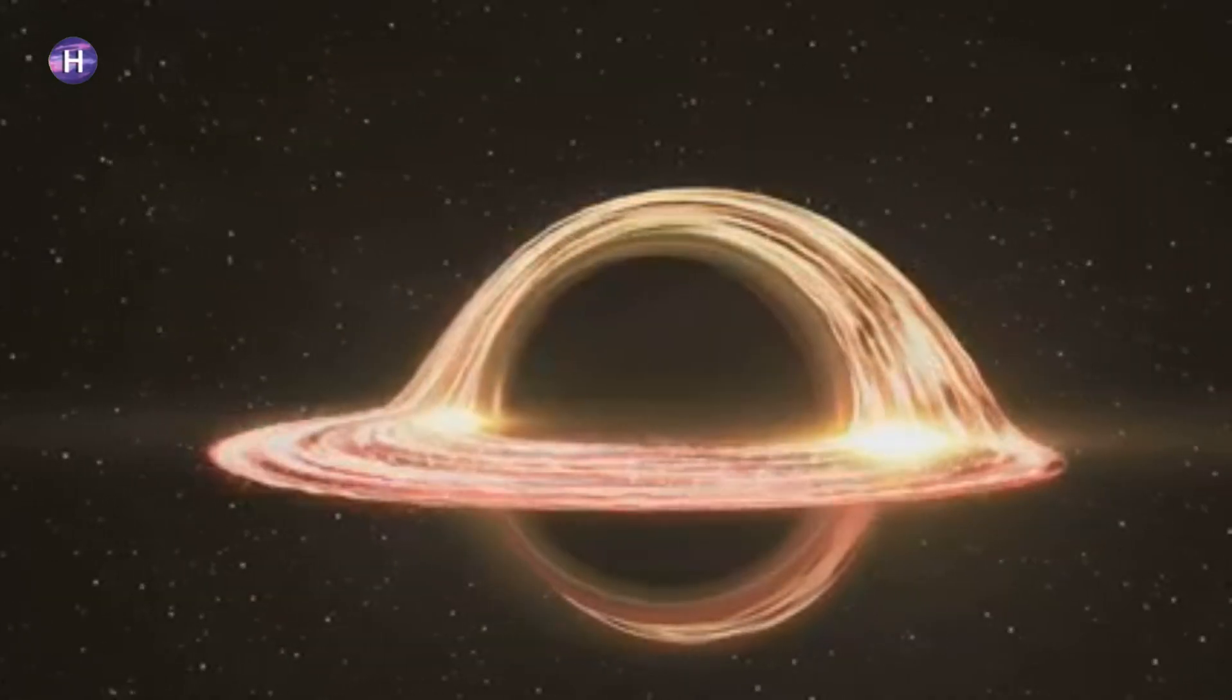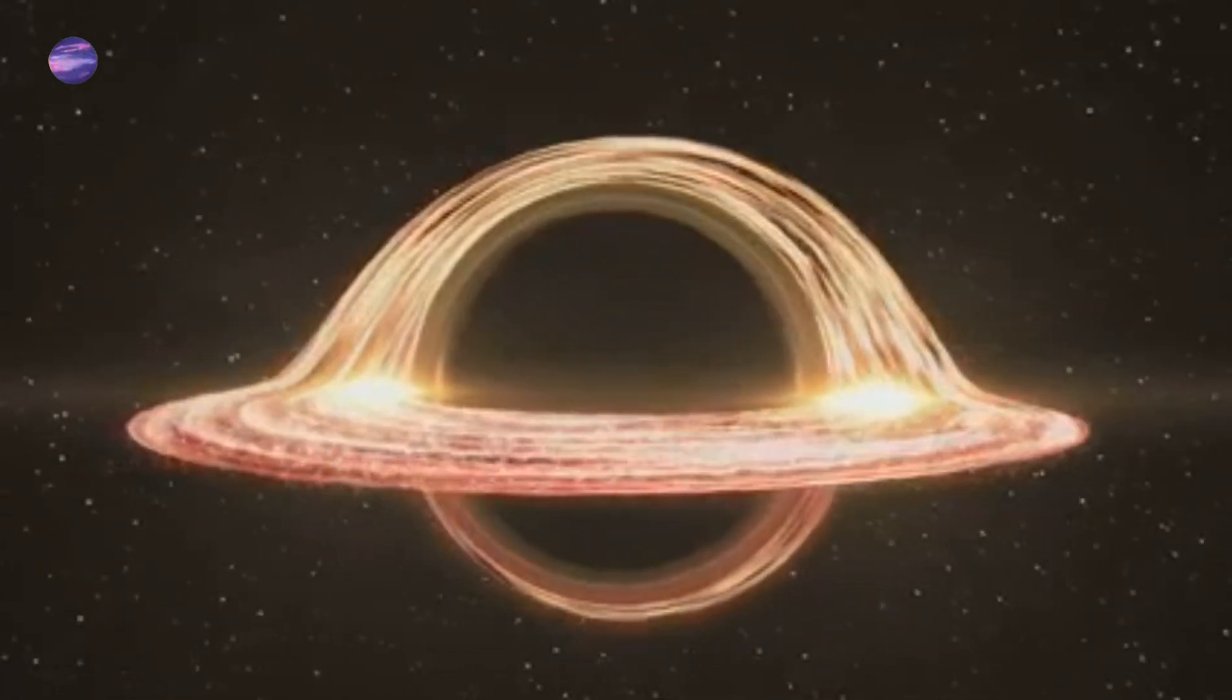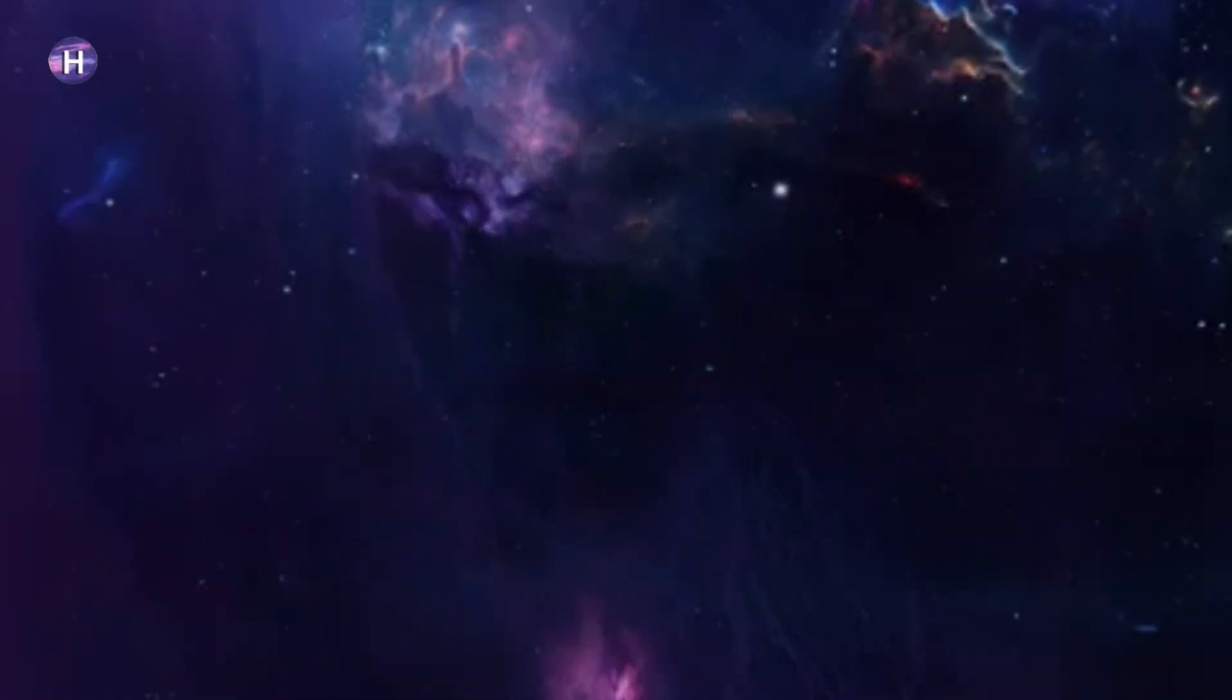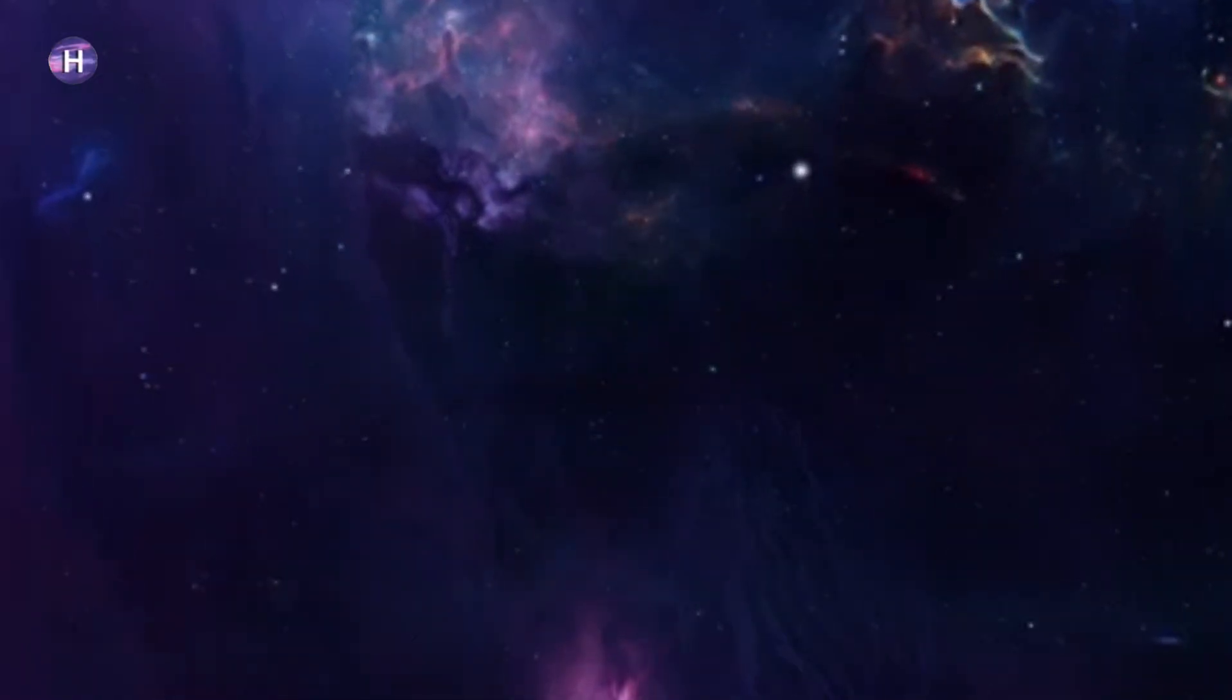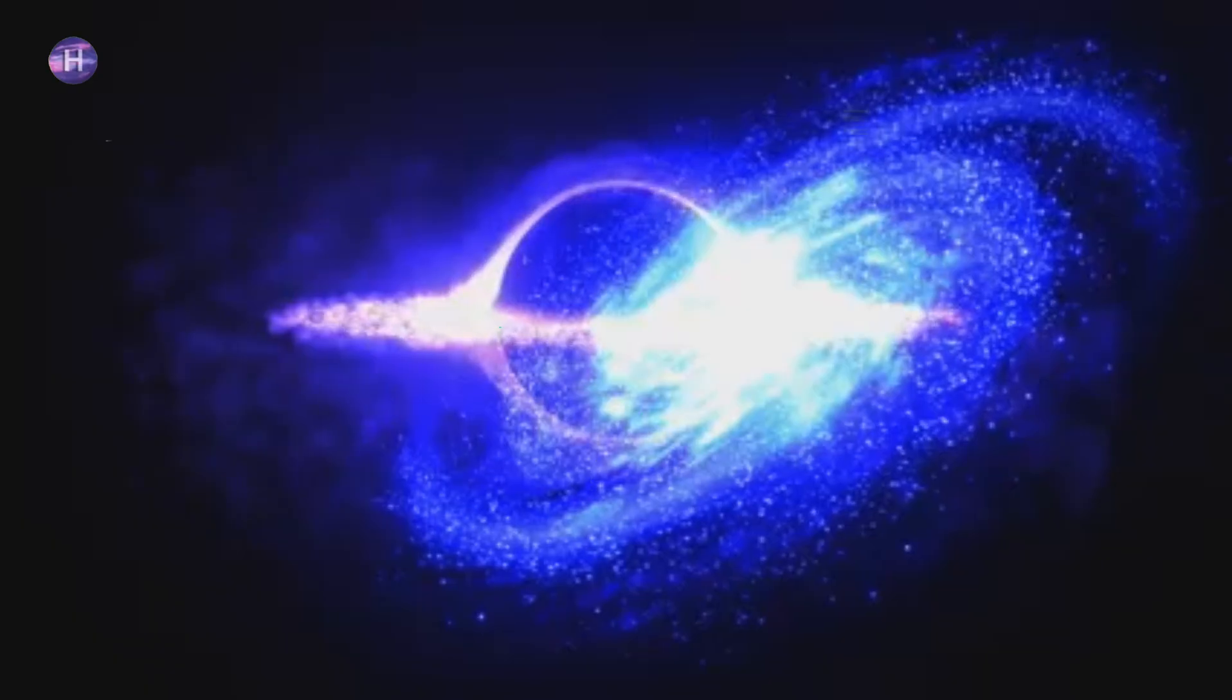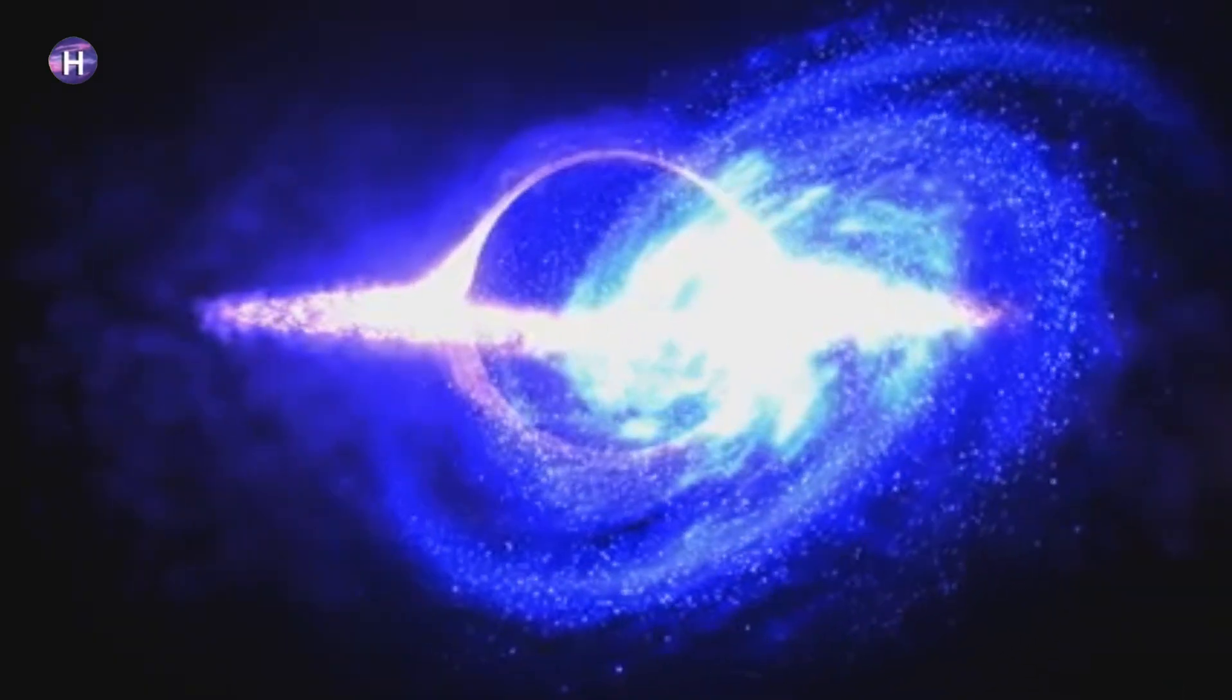The matter swirling around a black hole is called an accretion disk. It is made up of gas, dust, and even stars. As this material falls toward the black hole, it spins faster and faster. The friction between the particles in the accretion disk heats it up to millions of degrees. This is why accretion disks are so bright. They shine brightly across vast distances.